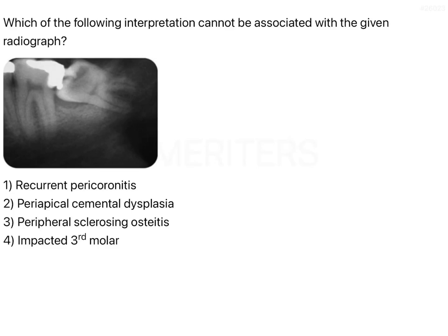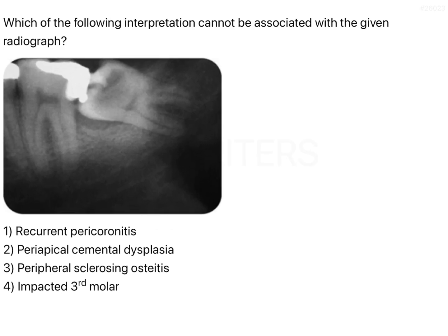The question asks which of the following interpretations cannot be associated with a given radiograph. Note it says 'cannot' and not 'can,' so you are trying to eliminate the wrong answer. That means three options are correct and one option is wrong.